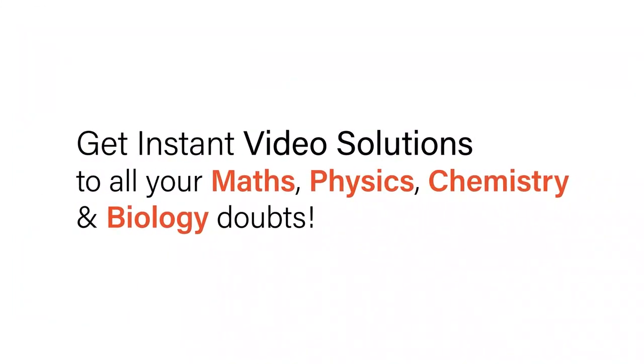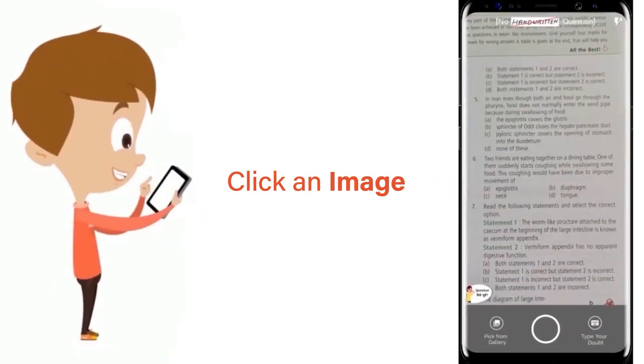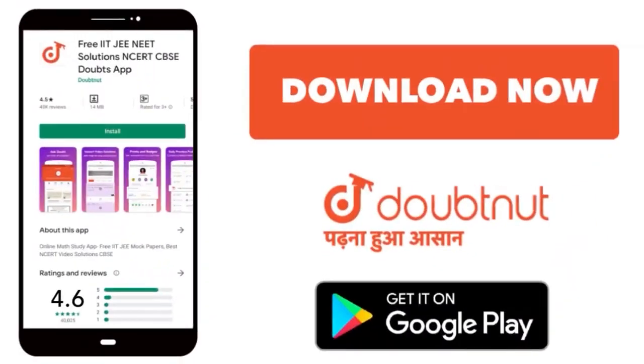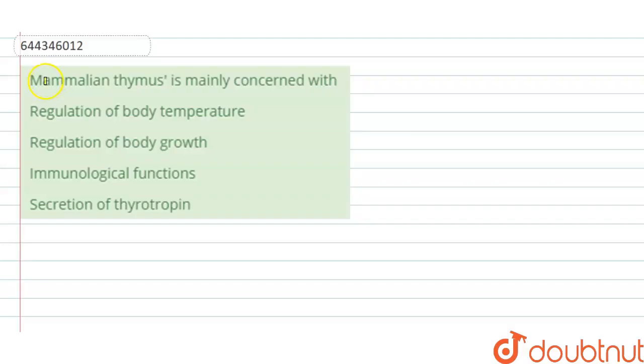With Doubtnet, get instant video solutions to all your math, physics, chemistry, and biology doubts. Just click the image of the question, crop the question, and get instant video solution. Download Doubtnet app today. Hello, the question is: Mammalian thymus is mainly concerned with